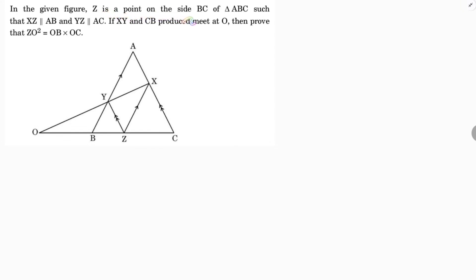In the given figure, Z is a point on the side BC of triangle ABC such that XZ is parallel to AB (or BY), and YZ is parallel to AC (or XC). Here you can take it as XC. If XY and CB are produced to meet at O, then prove that ZO squared equals OB times OC.